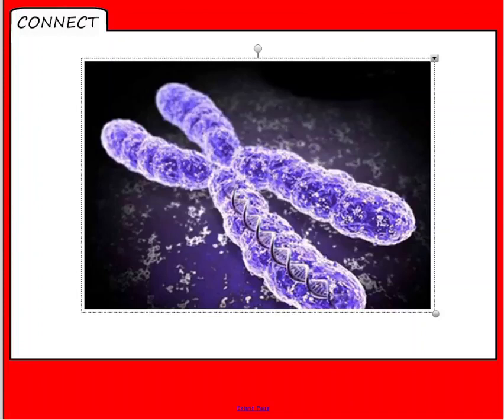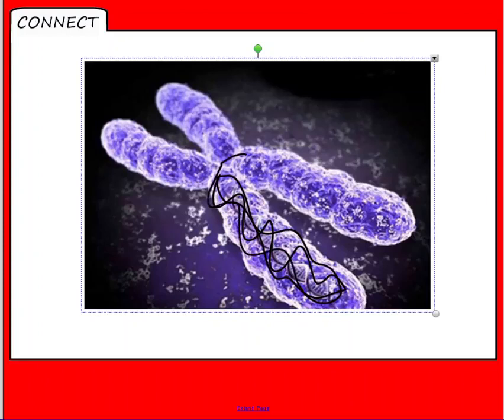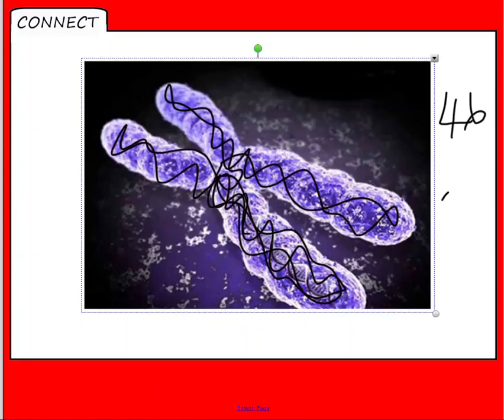And we've got 23 that come from your mum and 23 that come from your dad. And you can see from this one that the chromosome is made of DNA, so it's got all DNA wound up into this X shape. So we've got 46 in body cells and 23 in gametes, which are sex cells like sperm and egg cells.